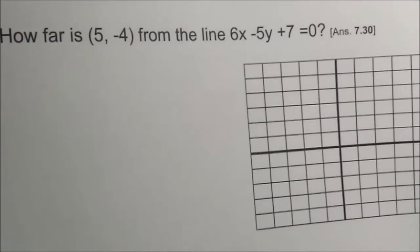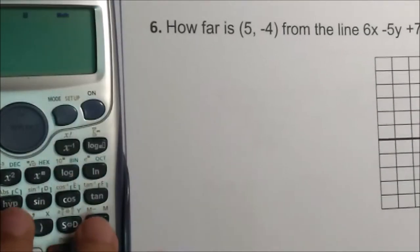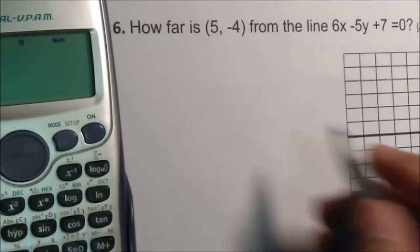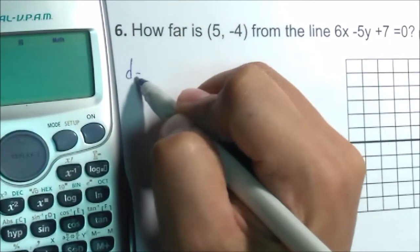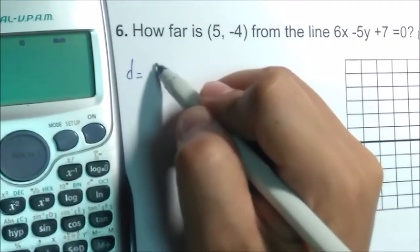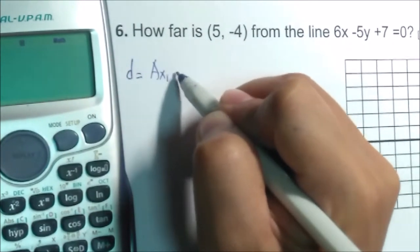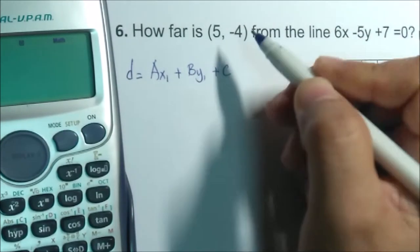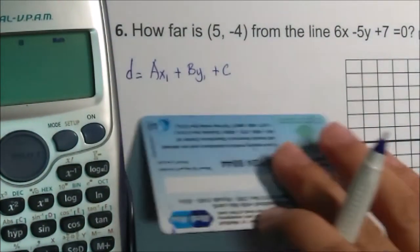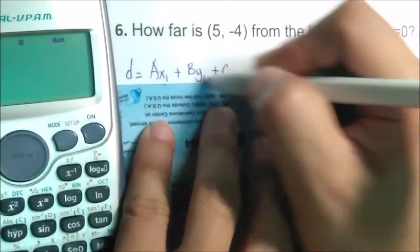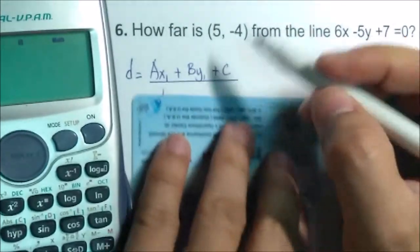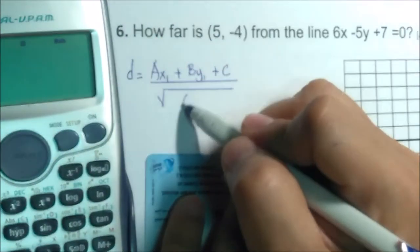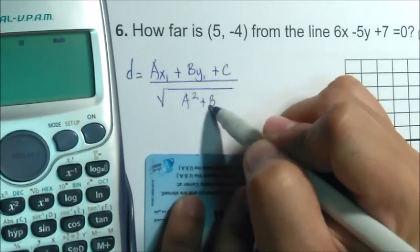We have distance equals Ax₁ plus By₁ plus C over square root of A squared plus B squared.